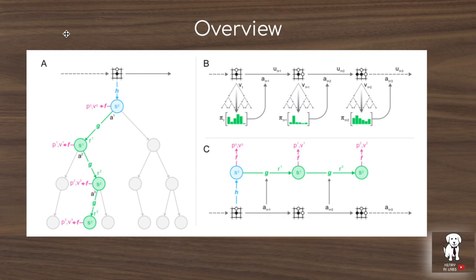Rather than mapping S to S-prime as a 96×96 RGB frame of the Atari game, MuZero takes the original observation — a stack of 32 of the last 96×96 RGB frames — and applies the same kind of state encoding used in Go, Chess, and Shogi in AlphaZero. It maps this original input state to a low-dimensional representation using the first neural network in the MuZero pipeline: the H network. The H network takes in the original observation and maps it into a low-dimensional root state that starts the planning.